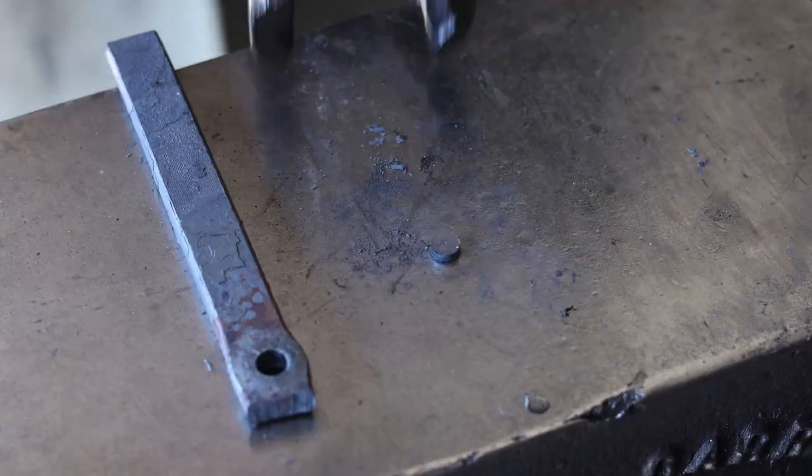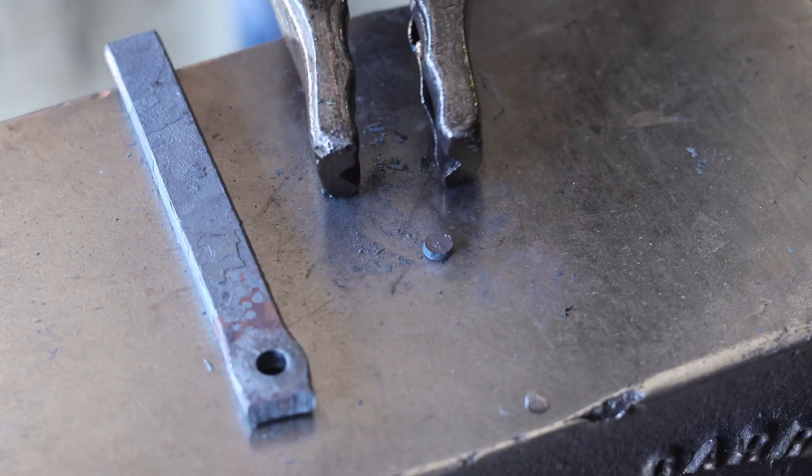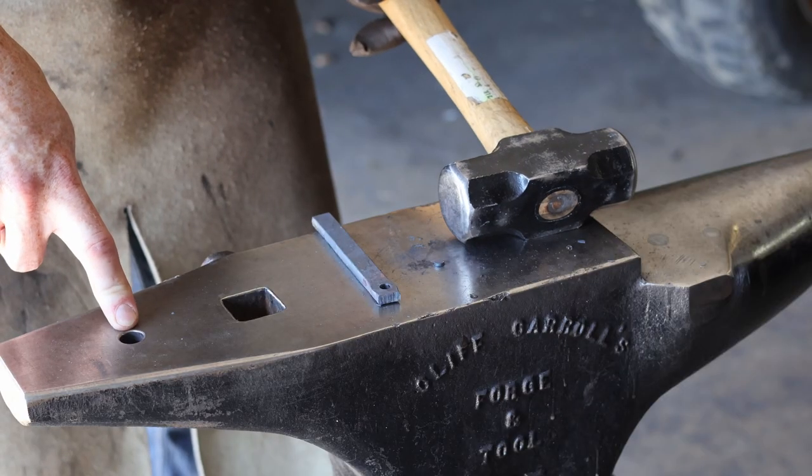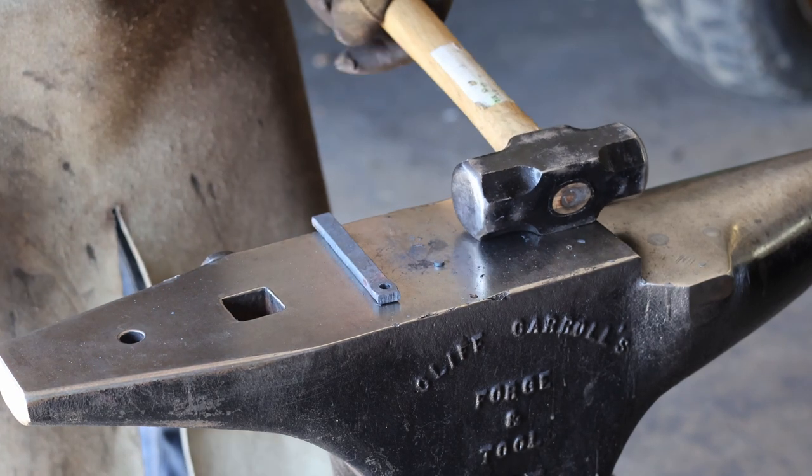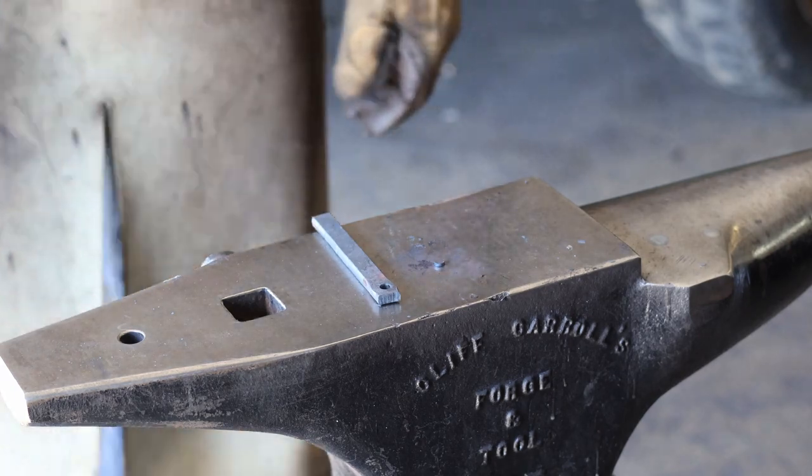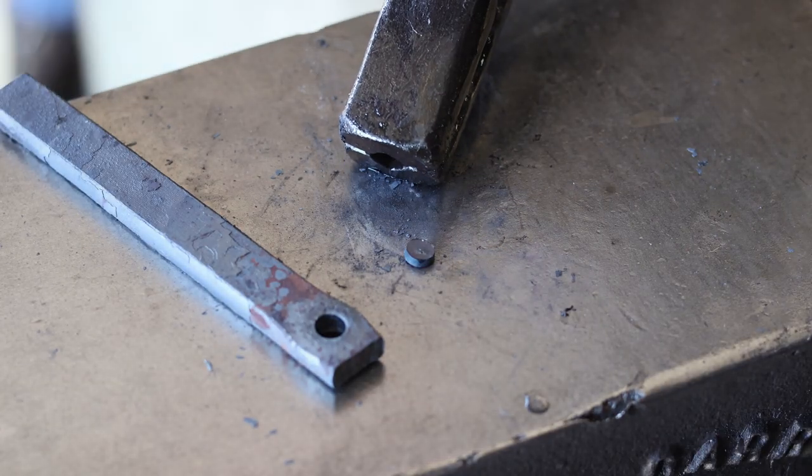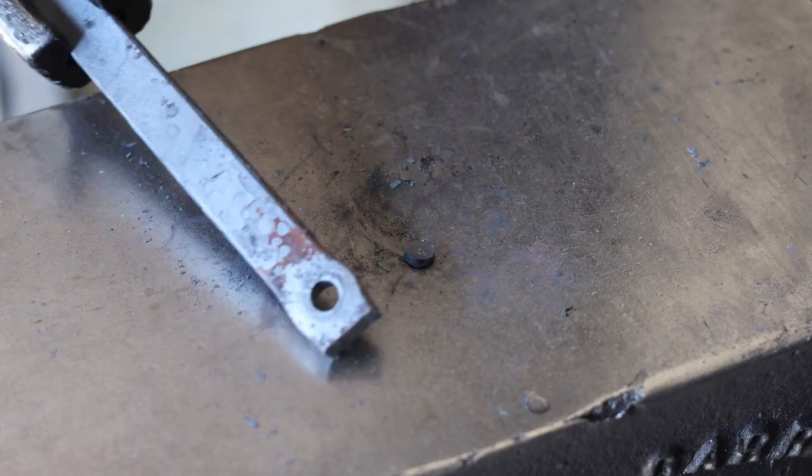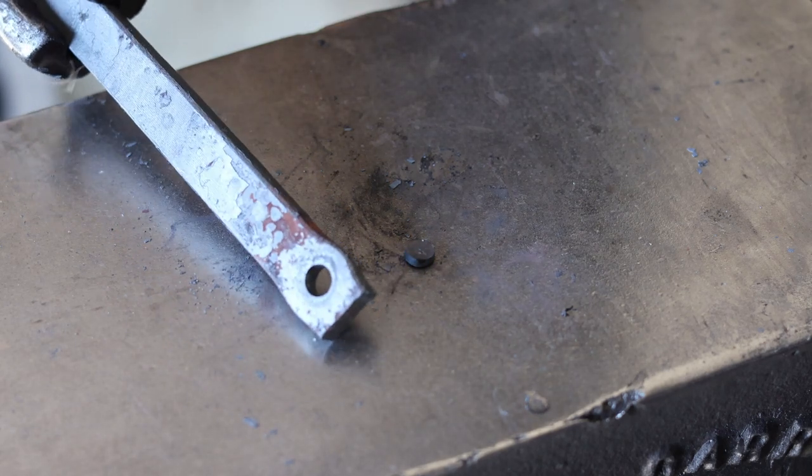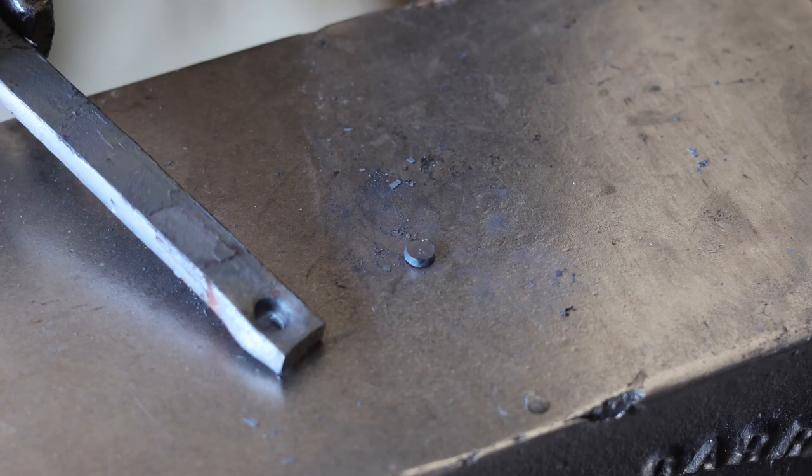Now you can see this plug that just popped right out. Usually I would take that to the pritchell hole and back punch that over the pritchell hole to make sure that plug shears out. But I sheared it without even going to the hole this time. And that happens on occasion. So the goal is you're trying to get as clean of a hole as possible. Letting that cool down to a black heat before you back punch is going to give you the nicest, cleanest hole.